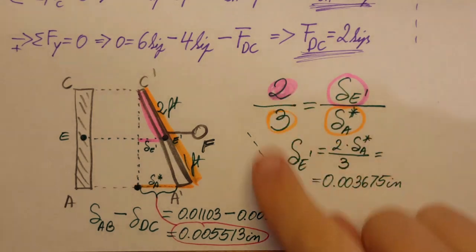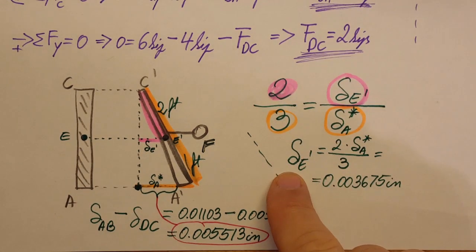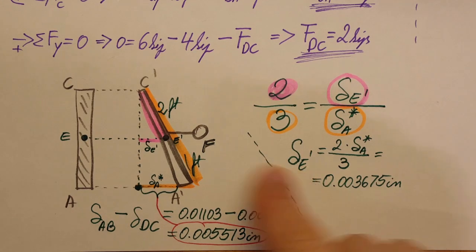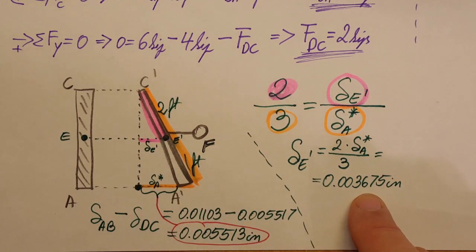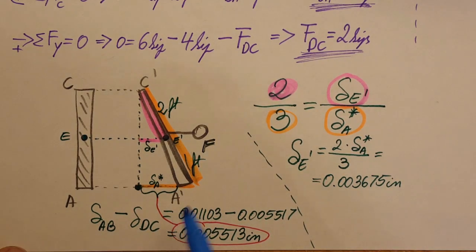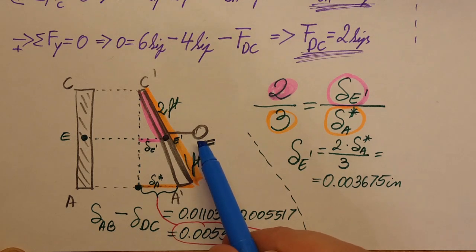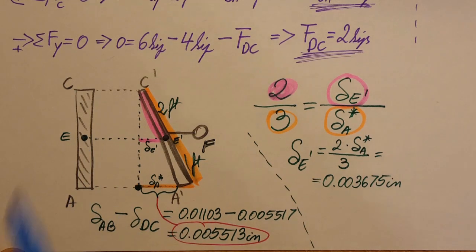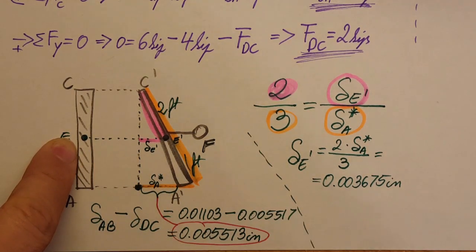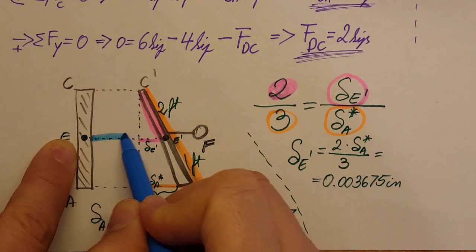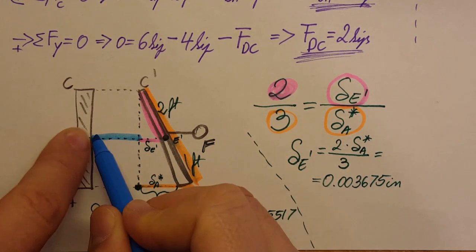Okay, I plugged in, I solved for the deformation of E, this one, and plugged in. Here's my value for it. But we are not done yet, this is not what they were asking for. So what we are interested is point F, how much did it get displaced from its original location.